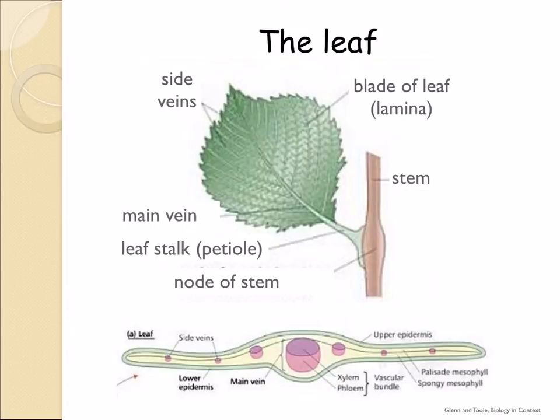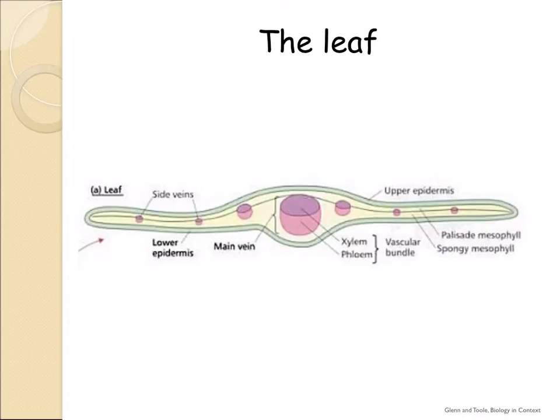Have a look at where the xylem and phloem are located. Within each vein or vascular bundle, you've got an area of xylem, seen as the purple area at the top, and the phloem, represented by the pink area towards the bottom. Take a moment to examine this cross-section and notice where you would find the palisade and spongy mesophyll as well.